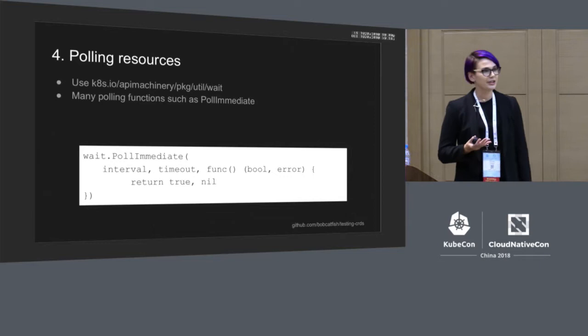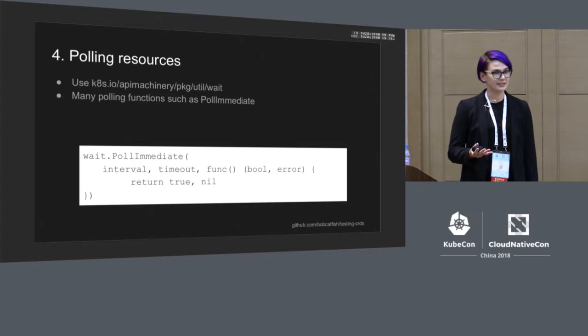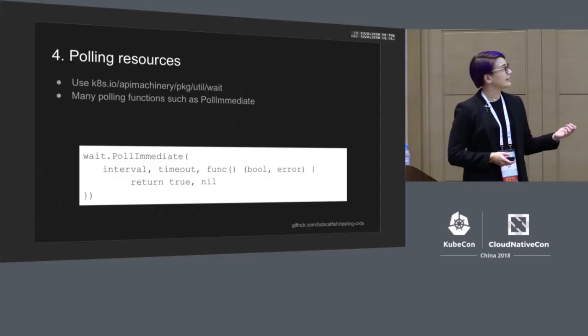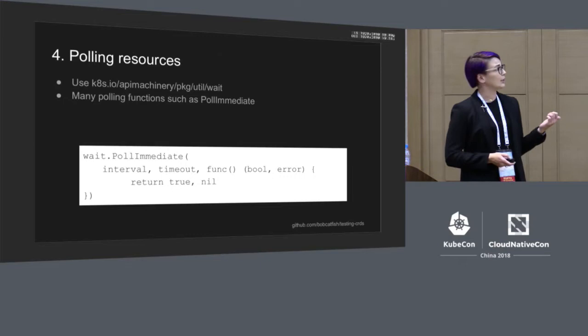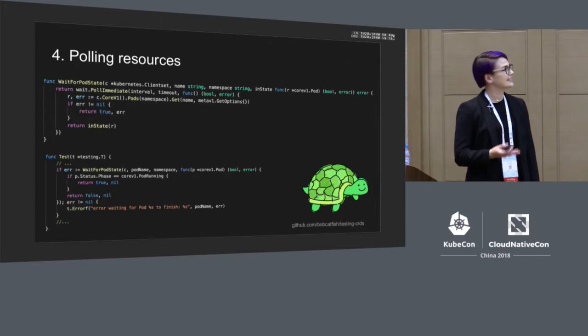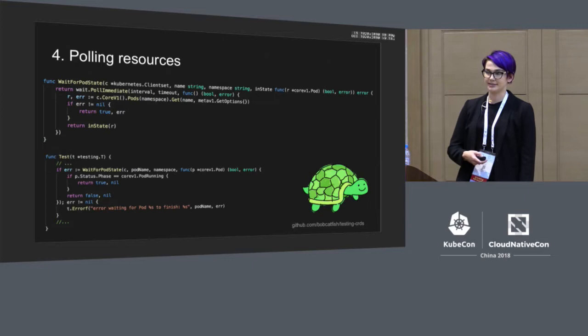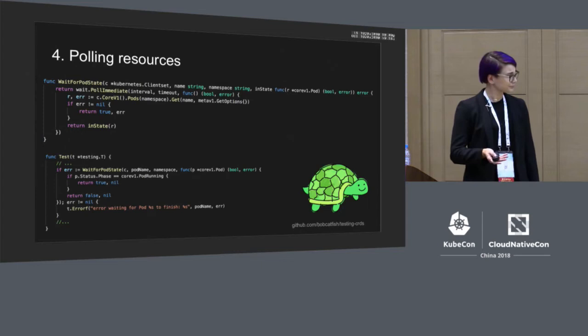CRDs create declarative APIs, which means our APIs are eventually consistent and operations are asynchronous. Just because we made a create call and it returned doesn't mean the resource was actually created. So our tests need to do polling to wait for the system to realize the state we declared. I find the poll functions in the API Machinery library really helpful for this — specifically the PollImmediate function. It's called immediately and continues to be called every time interval until it either returns true or times out.